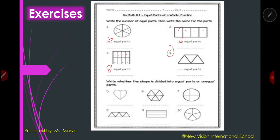Now we are going to write whether the shape is divided into equal or not equal. How do you know it is equal? You can see that the parts have the same size. How do you know if it's not equal? Unequal means not all the parts have the same size. Number five — it is equal. Number six — it is equal. Number seven — these parts are smaller and this one is bigger, so write 'unequal.' Number eight — it is equal. I want you to answer numbers nine and ten alone — decide whether it is equal or unequal.